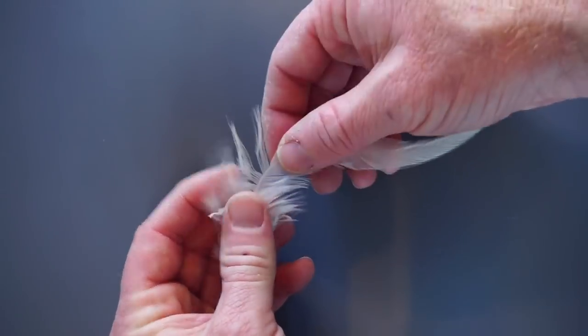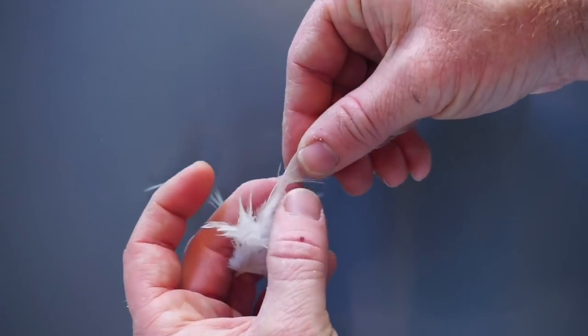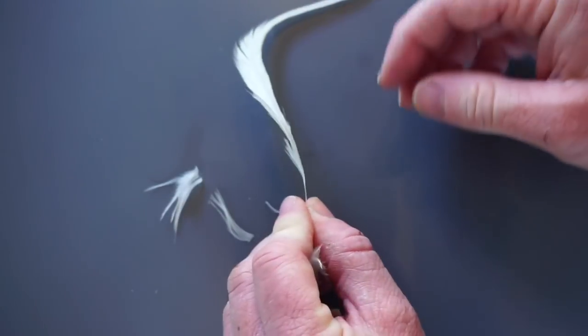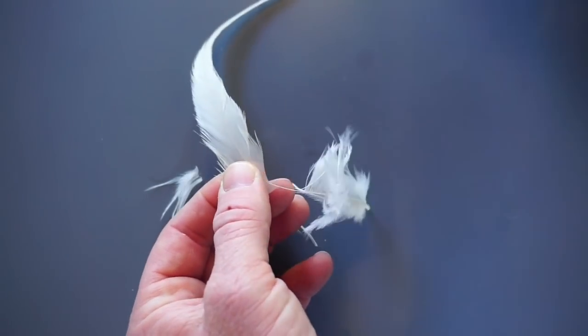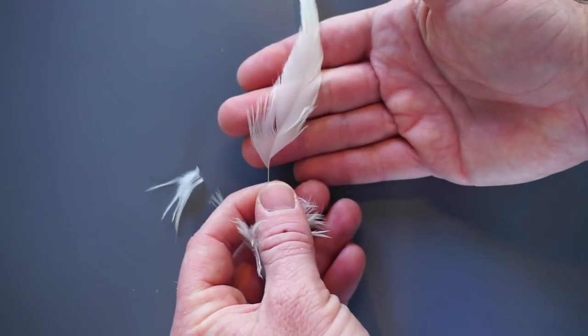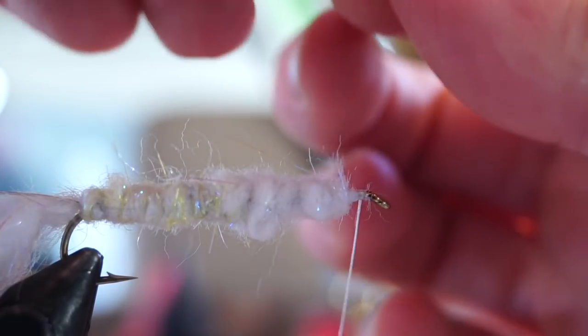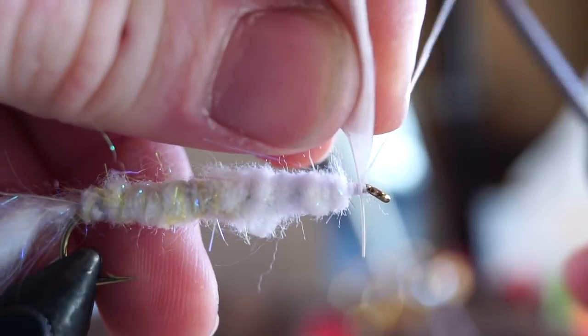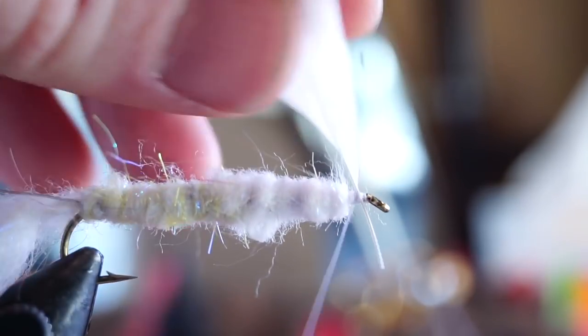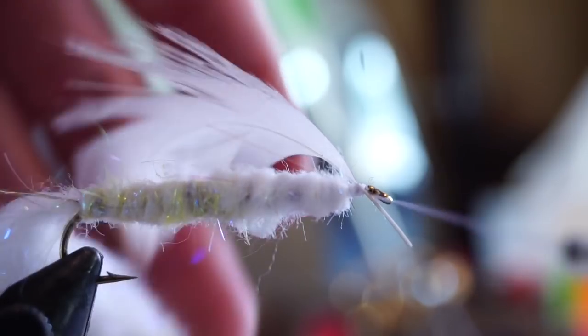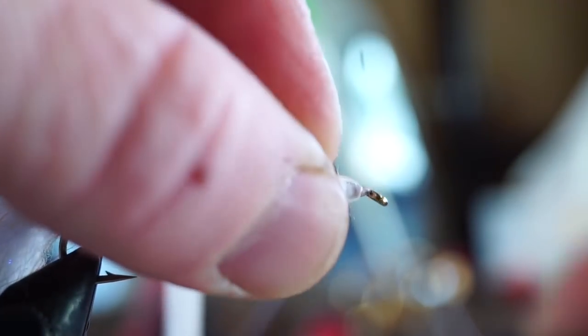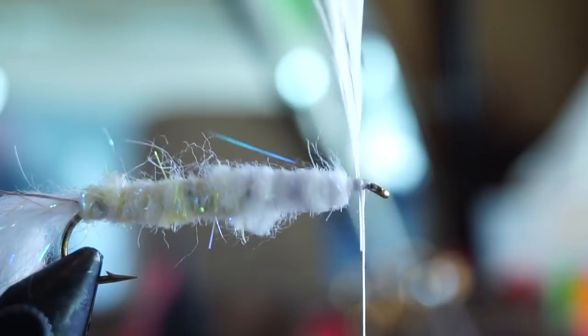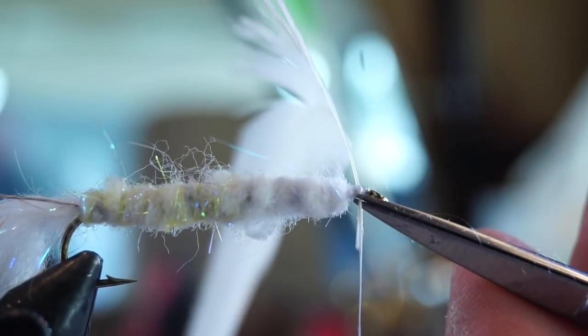To prepare this feather for tie in, strip off the bottom fibers, right after they start getting webby. Now you can see there's a curve to the feather when looking at it from the top. Strip off some of the fibers to the right of the curve, leaving the stem uneven like so. With the curve of the feather angling rearward, and the side with less feather facing away from you, tie this feather in right behind the hook eye, straight up and down. This is achieved with two wraps over the feather, and then two wraps over it going the opposite way. Then I like to make two tight wraps in front of it to really lock it down tight. Then clip off the excess stem.